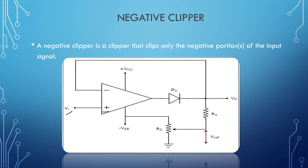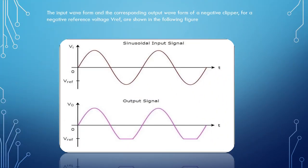Looking at the input and corresponding output waveform of the negative clipper: the reference voltage Vref is set at the negative side of the axis. Once the sinusoidal input voltage reaches the reference value, it gets clipped — that is, when the input voltage value exceeds the reference voltage value, it gets clipped off. So that's it for the clippers; let's move on to the clampers.